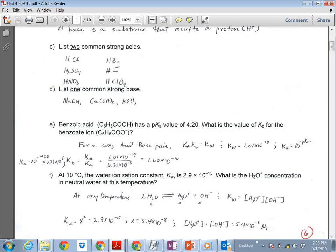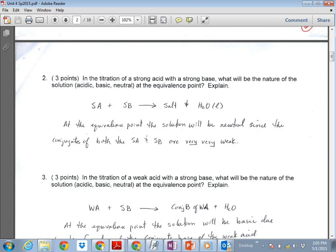On to the next page. The first one up there was, and these were worth each three points apiece. I wanted you to kind of describe what the pH would be and why if you took a strong acid and reacted with a strong base. And it's pH 7, but the reason is because you have equal number of hydrogen ion and hydroxide ion.